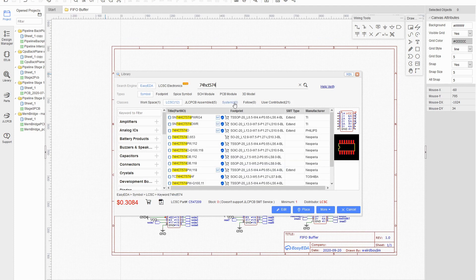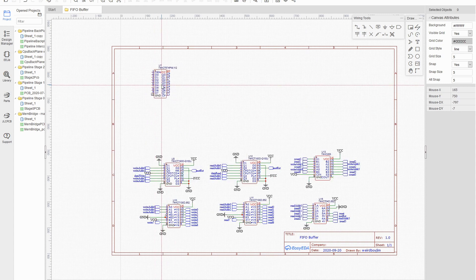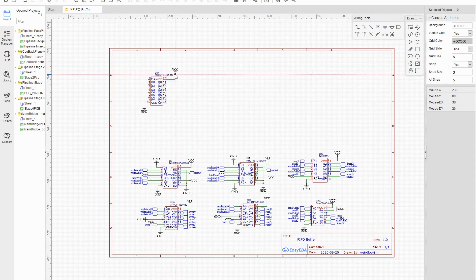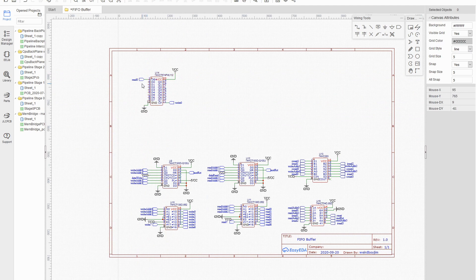This time we want the 574 latch chips. I'm going to do something different though. Now I've been using the SO form factor, but I'm going to try making this with the TSSOP, which will look exactly the same in EDA, but they're going to be quite a bit smaller. So I want to define my eight data inputs and my eight data outputs and replicate this eight times. I'm not going to make you watch me do that though, because that's fairly obvious.